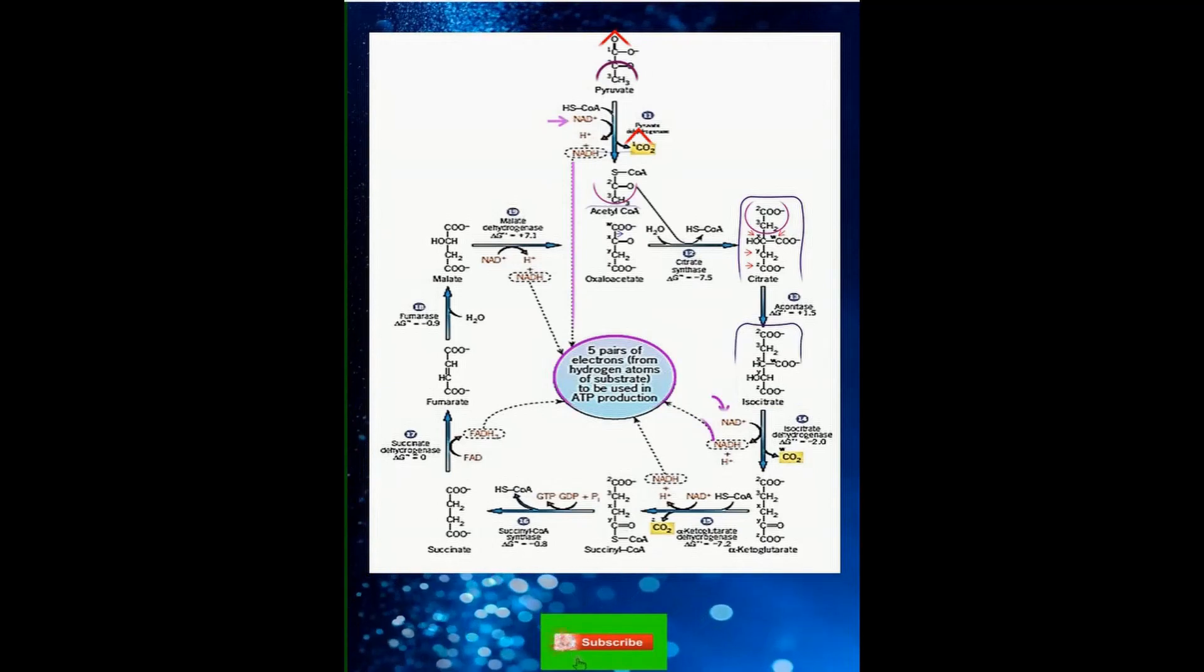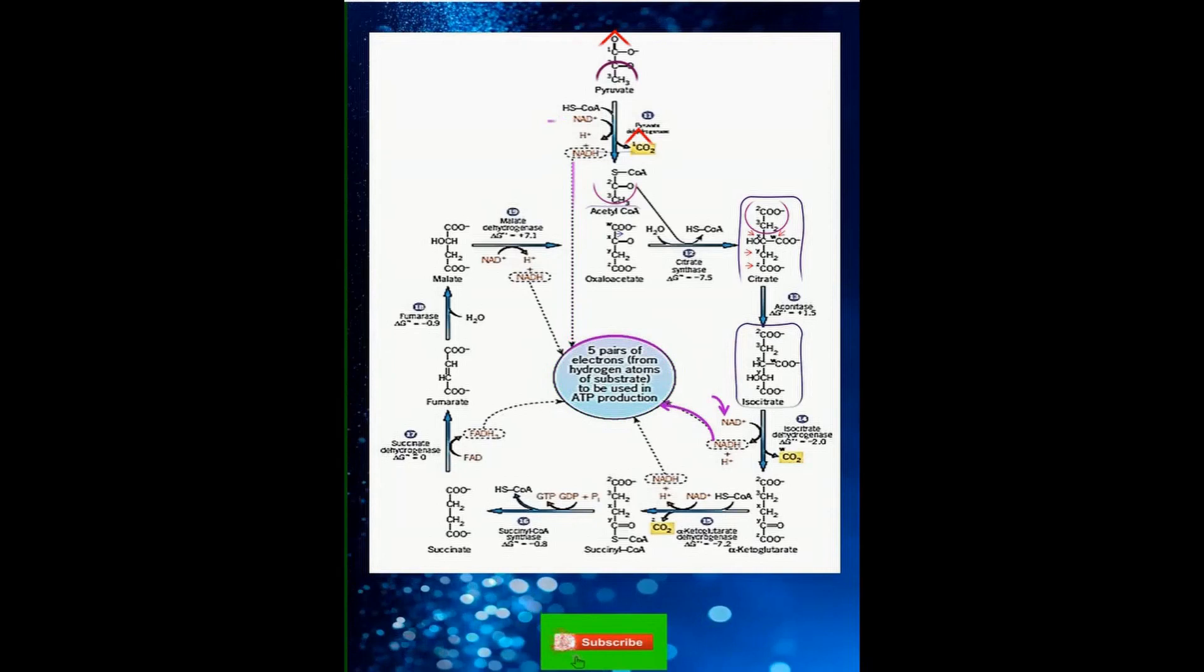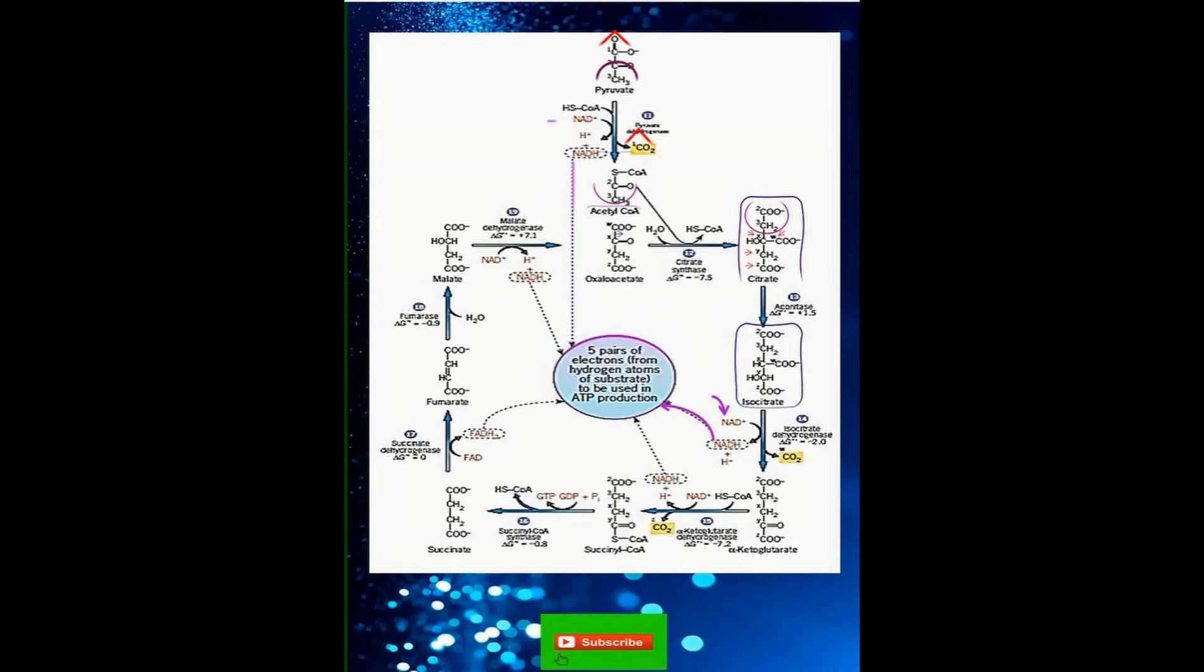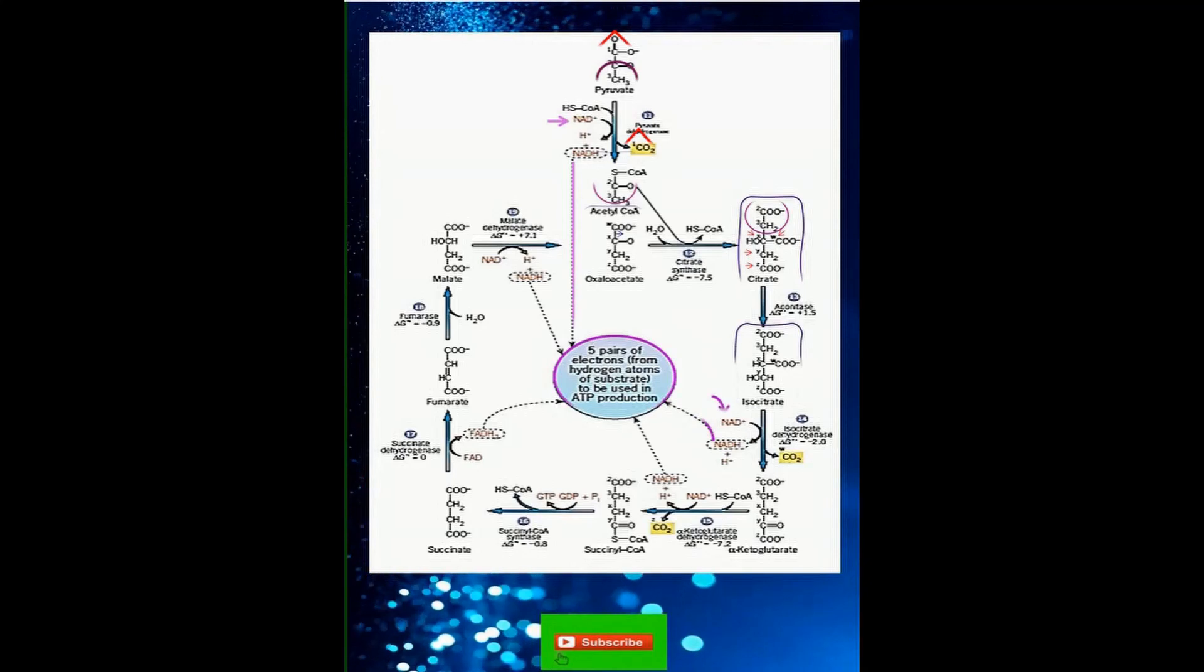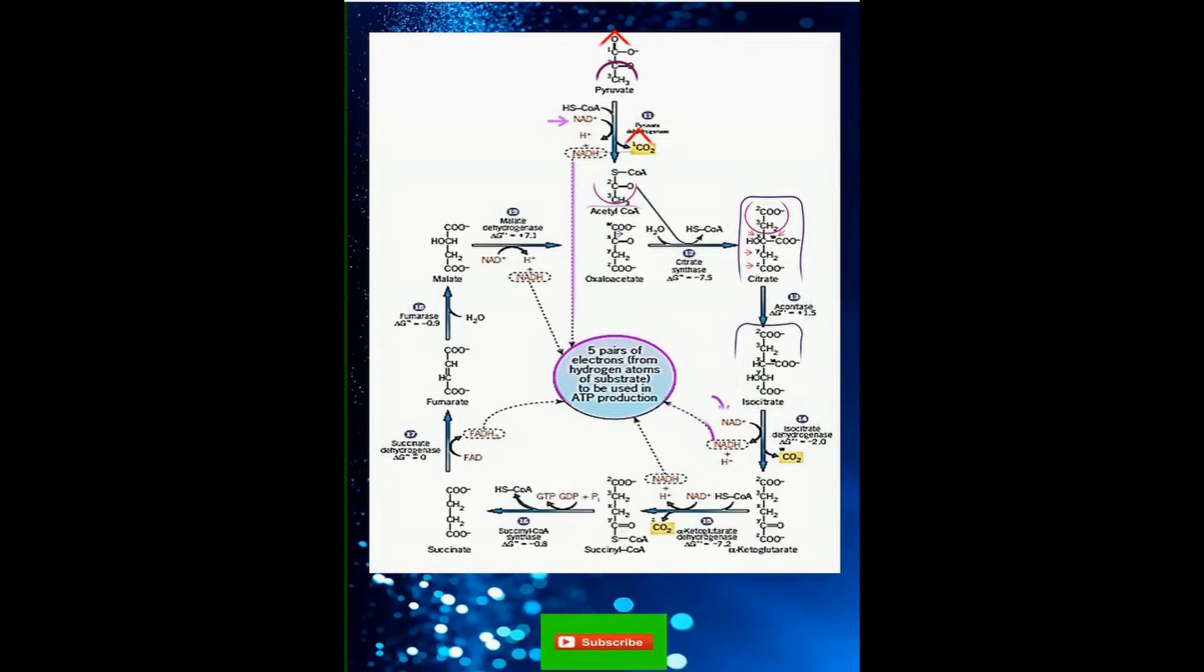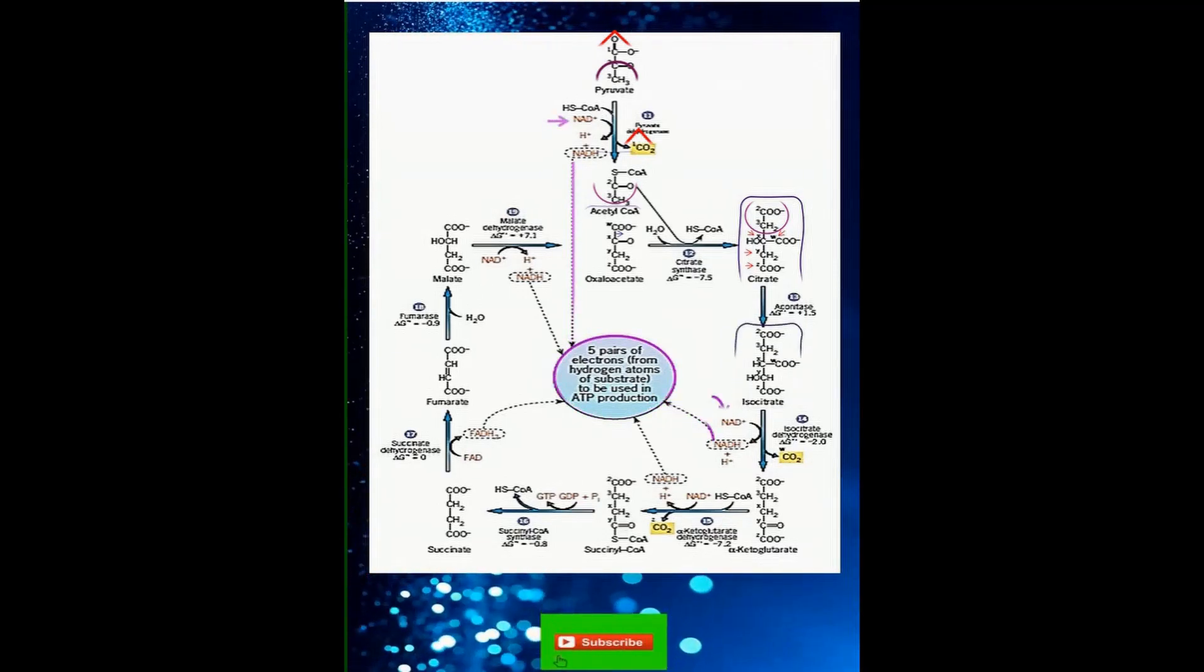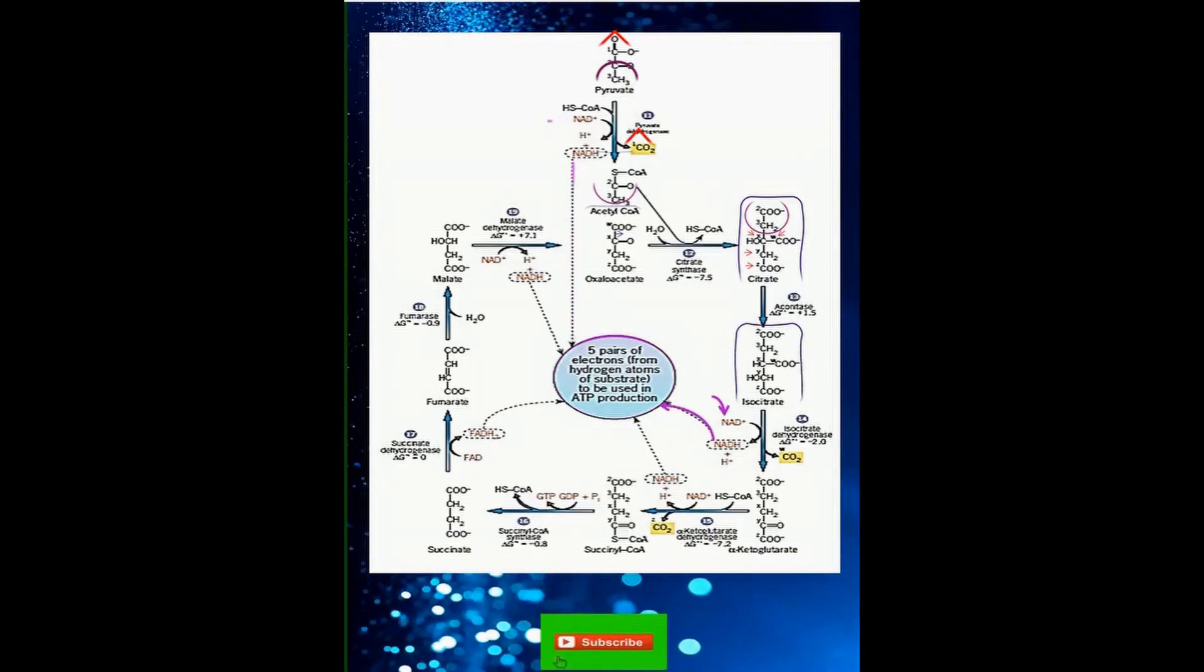The third step is catalyzed by isocitrate dehydrogenase. With citrate rearranged, the process begins. Isocitrate dehydrogenase links to isocitrate which transfers an electron to NAD producing its energized form NADH. With the electron removed, the enzyme then detaches a carbon atom to form a molecule of carbon dioxide. This transforms the 6-carbon molecule to a 5-carbon molecule.